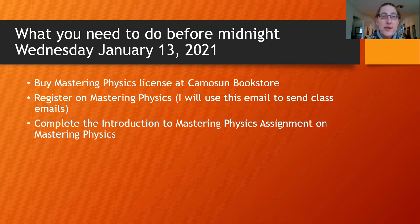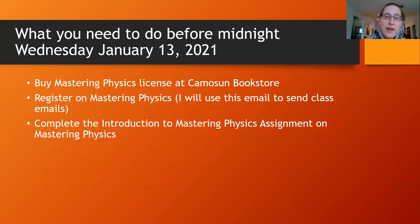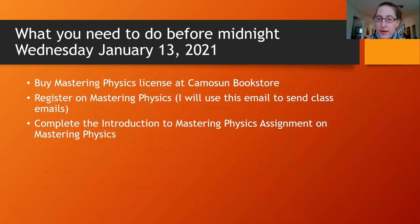Before midnight Wednesday, January 13th, you need to buy the Mastering Physics license at the Camosun bookstore. Make sure you click on the correct textbook, because other instructors use Mastering Physics and clicking the wrong one will give you the wrong license. When you register, please use an email address you will routinely check, as I use Mastering Physics to email the whole class. You also need to complete the first assignment, due midnight January 13th — it's nothing to do with physics, it's simply about how to use Mastering Physics. Bye for now, and feel free to email me if you have questions.